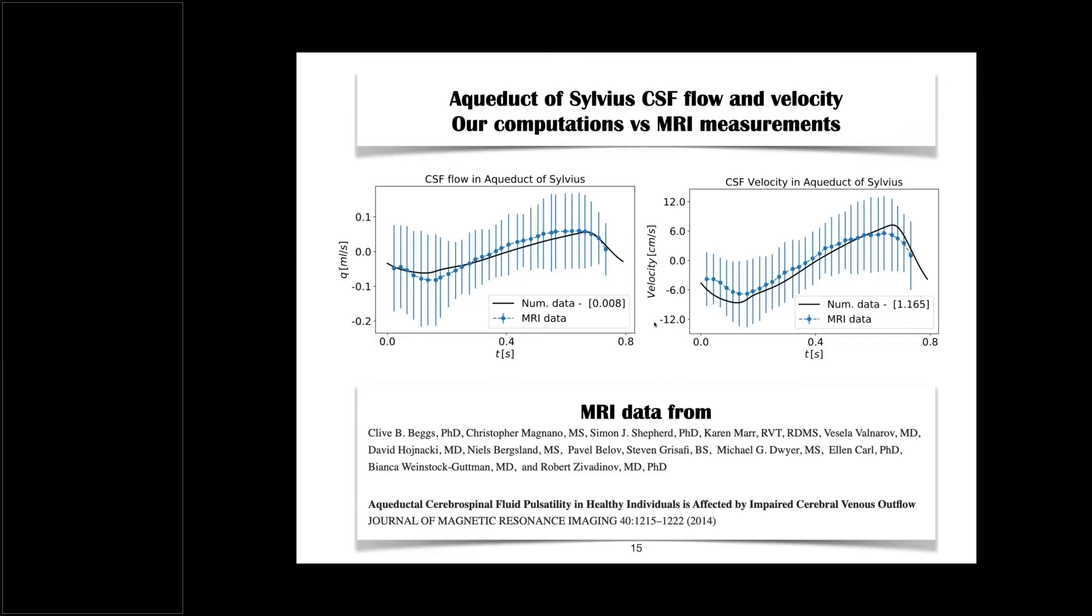Now, we have more comparison here. What you see here in this picture on the left is arterial flow into the brain here. Normalized, so it is a maximum of one here. This is the black curve here with the points. This is data obtained from this paper here. And the simulations are represented by the red line here. Then we go to the CSF flow, C2-C3 level, corresponding to this simulation. So, it's the same computation in the same subject where the simulations are done.